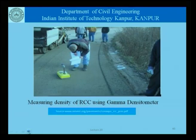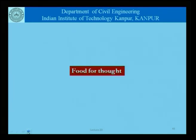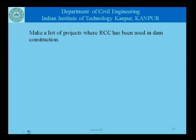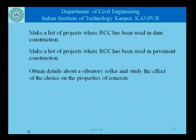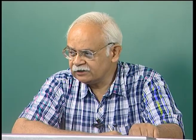This shows the in-situ measurement of density using a gamma densitometer. Coming to a close of our discussion today, let us take back some questions: make a list of projects where roller compacted concrete has been used in dam construction, make a similar list for pavements, and obtain details of a vibratory roller and study the effect of roller choice on the properties of concrete. There are several other things alluded to in today's discussion that can also help us better understand roller compacted concrete.